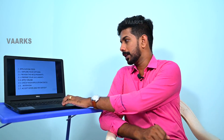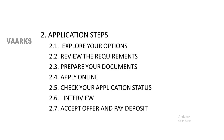Next we move on to the application steps section. The first heading is exploring your options — that is how to explore your options for the course. The next section is the requirements review, covering how to search for and what the requirements for the PhD program are. The third section is document preparation, covering which documents are required. This is followed by the online application section, checking of application status, interview details covering the interview process, and finally accepting the offer and payment of deposits.